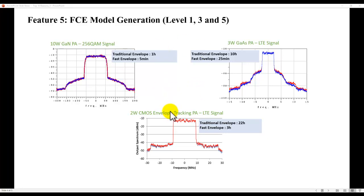In terms of speed, you can notice here using fast envelope technology, we are able to run simulations in a much faster manner for variety of modulation bandwidth cases. Level one, three, and five provide you option to extract the right model for the right waveform and the right amount of non-linearity based behavior.